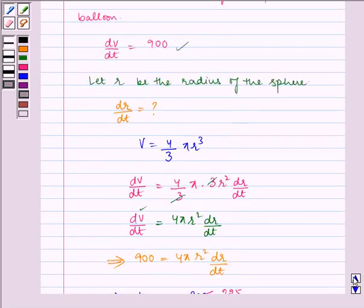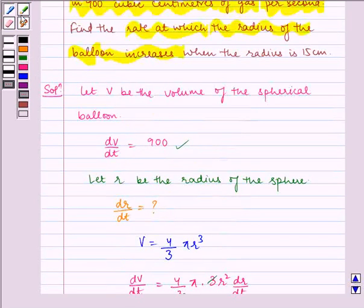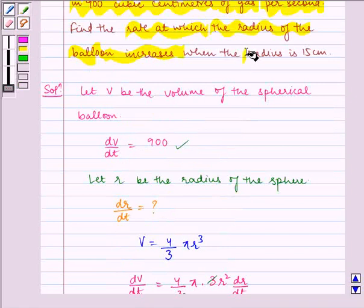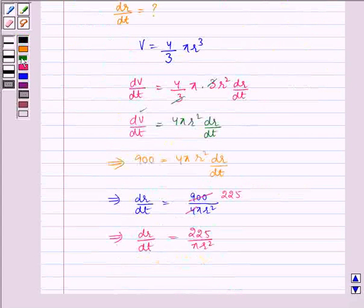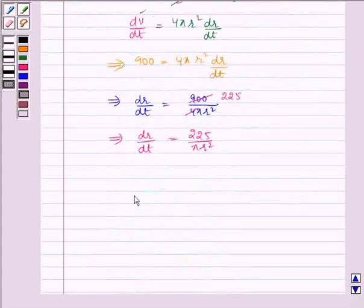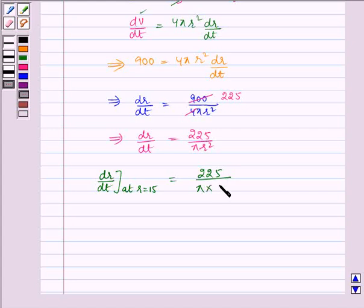Well, now in the question we have to find dR by dt at radius 15 centimeters. So, dR by dt at R equals 15 is equal to 225 by pi multiplied by 15 multiplied by 15.